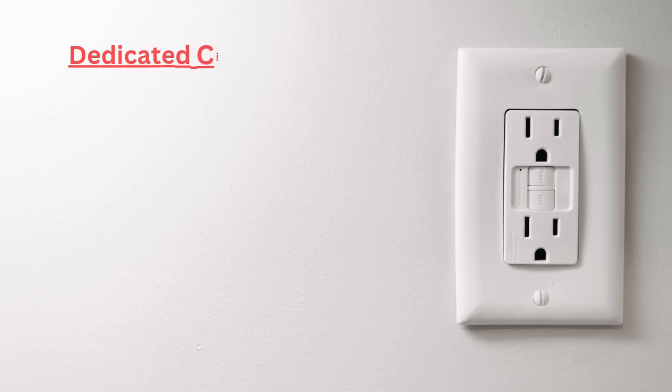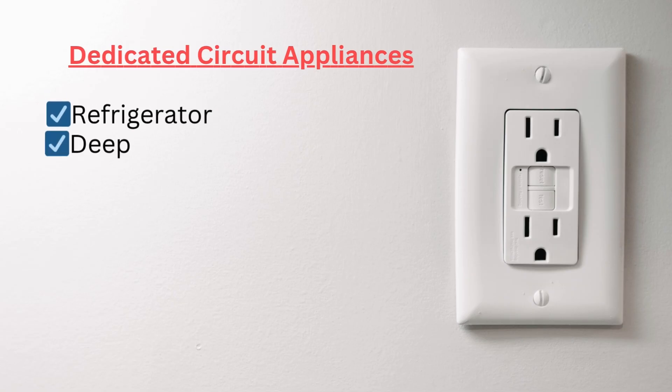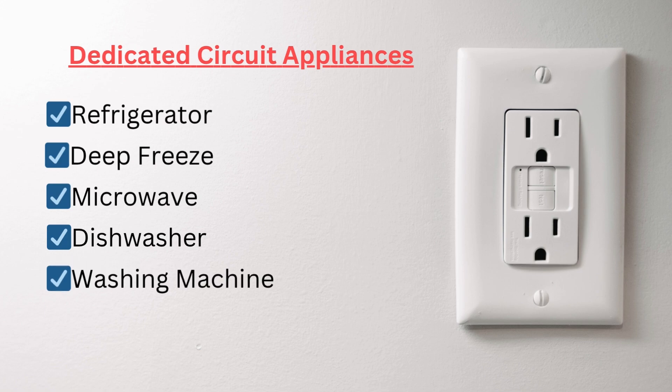A few different appliances that you really shouldn't incorporate into any circuit with more than one outlet: a refrigerator, deep freeze, microwave, dishwasher, washing machine, or electric fireplace. Some of these appliances either draw a lot of amperage on their own or it's required by code to have them on their own circuit.